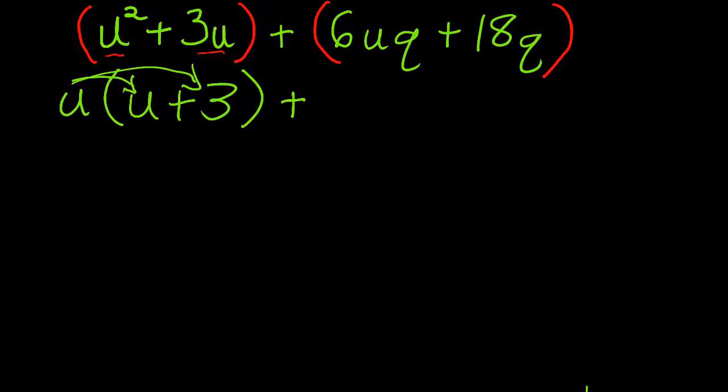Now the same thing over here. We know that 18 is 6 times 3. So both terms have a 6 and both terms have a q. So 6q is going to be the GCF of the second two terms, which will leave us with a u plus 3.